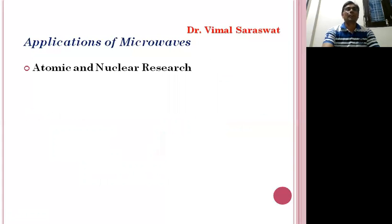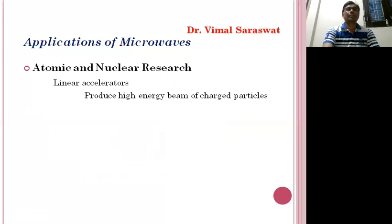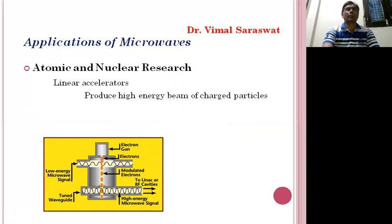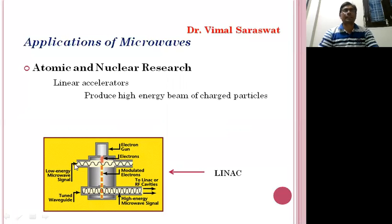The next application is in atomic and nuclear effects. Microwaves are used in linear accelerators to produce high energy beams of charged particles. Here we are showing a linear accelerator, LiNAC. Low energy microwave signals are sent in, electrons are emitted from an electron gun and travel in a downward direction. After crossing the microwave energy signal, the electrons become modulated electrons. Another high energy microwave signal is applied, and finally a high energy beam is produced, directed into the linear accelerator's RF cavities.